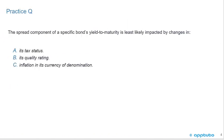Quick practice question to check understanding: The spread component of a specific bond's yield to maturity is least likely impacted by changes in A, its tax status; B, its quality rating; or C, inflation in its currency of denomination.